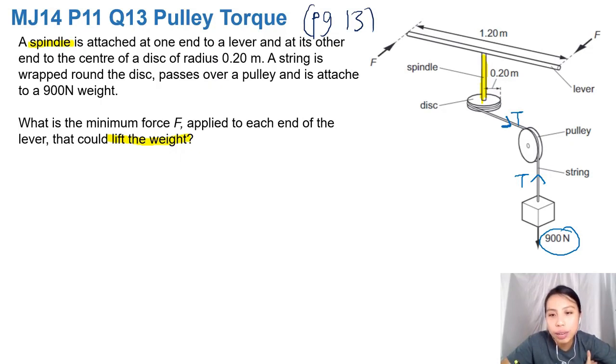Okay, so for the disc alone, if I redraw the disc, it's the disc. I'm looking for the top down view. Now there's a string tension that's trying to make it rotate that way because it's a heavy block on one end. And this T equals to the weight of the block.